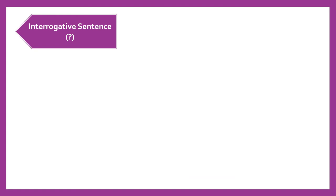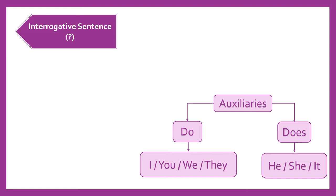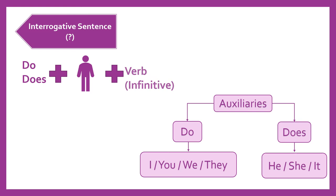Finally, the interrogative sentence. Here we also use the auxiliary, so we need to remember the two types of auxiliaries and the pronouns used with each. We start with do or does depending on the pronoun we write next, then a verb in the infinitive tense — not present simple — because we don't add an S to the verb; that only happens in the positive sentence. This is an interrogative sentence.